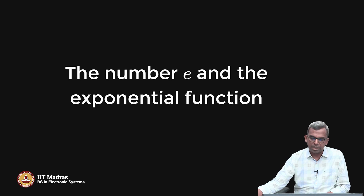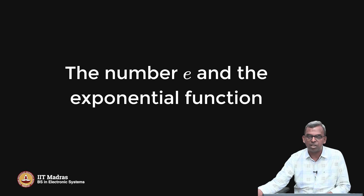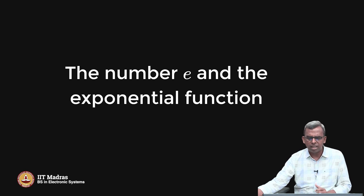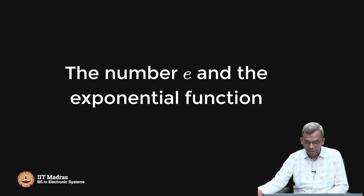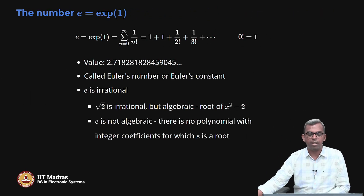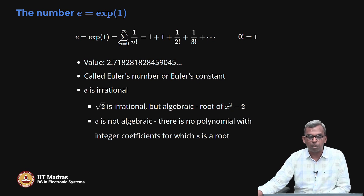Hello and welcome to this lecture. This lecture is about the number e that we defined in the previous one — exp of 1 — and its relationship to the exponential function. It turns out this e and the exponential function are very, very intimately connected, and this lecture will tell you what that connection is. First, let us look at this number e. It is a very, very famous number in mathematics: exp of 1, which is the summation from n equals 0 to infinity of 1 by n factorial.